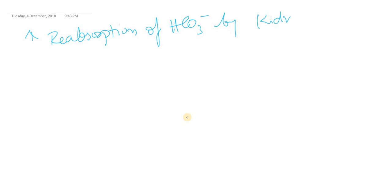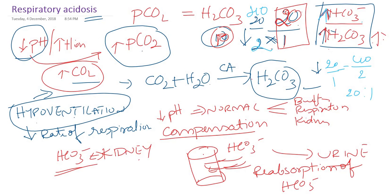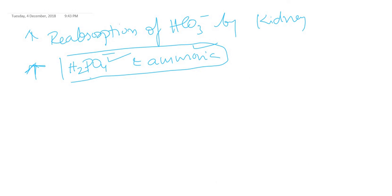This is one of the compensatory mechanisms. Also, when studying acid-base balance, the kidney normally excretes titratable acids — especially phosphoric acid — and also ammonia. The kidney tries to excrete more titratable acid and ammonia to minimize acid components, so that acid-base balance is restored. The major compensatory mechanism is retention of bicarbonate by the kidney.